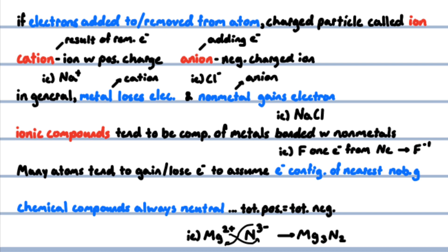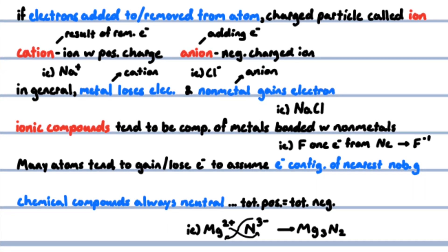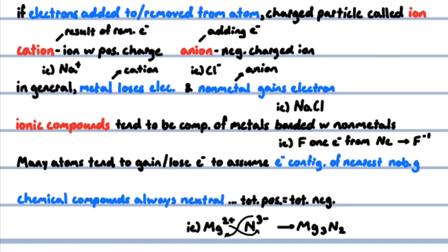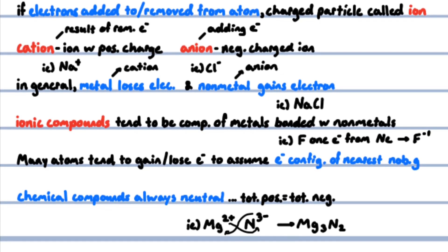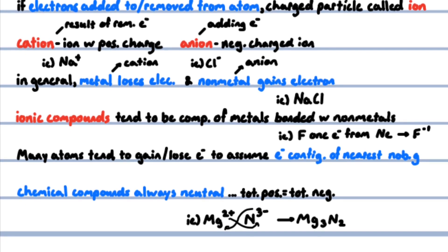Many atoms tend to gain or lose electrons to assume the electron configuration of the nearest noble gas. For example, a fluorine atom tends to gain an electron to assume the same configuration as neon. Chemical compounds are always neutrally charged, so total positive charge equals total negative charge.